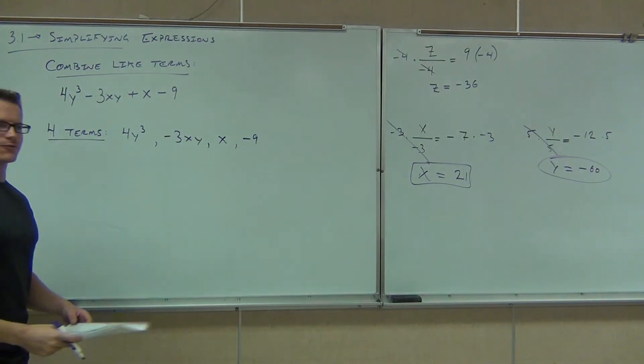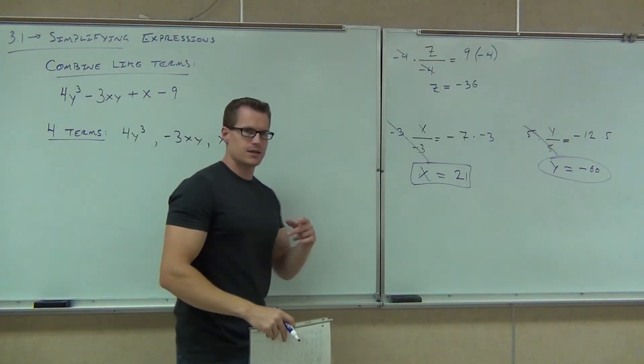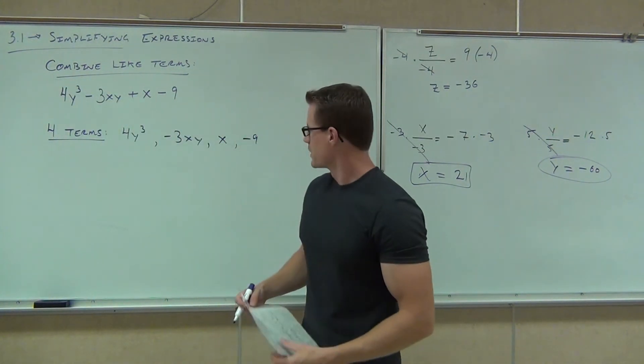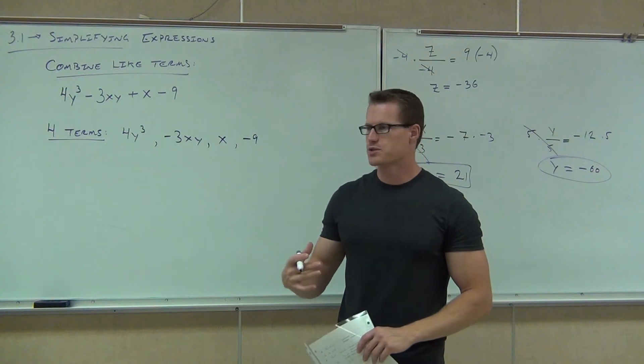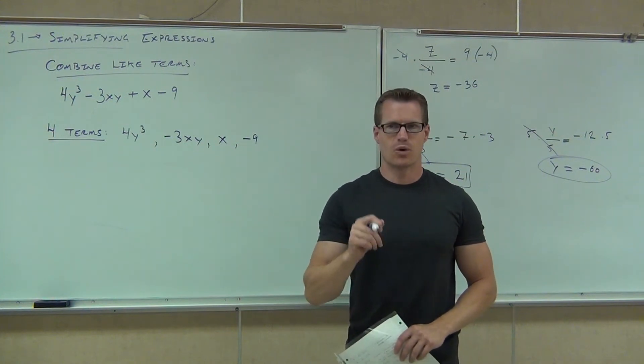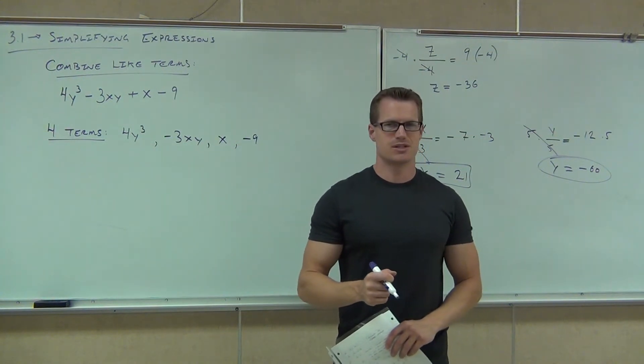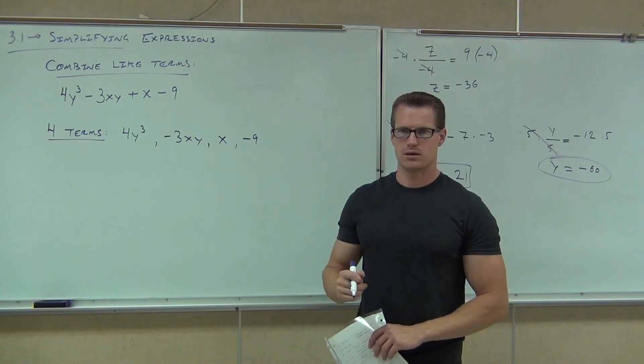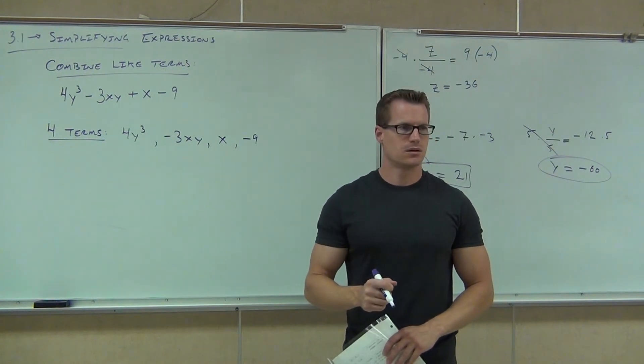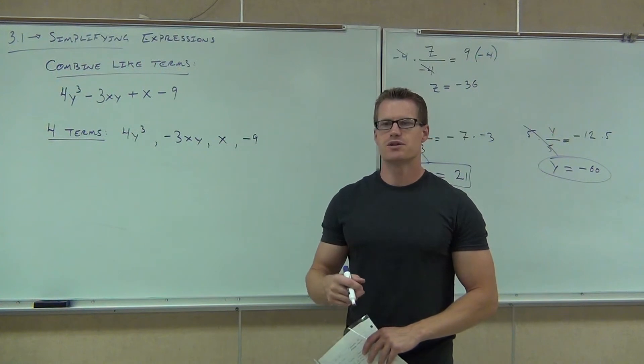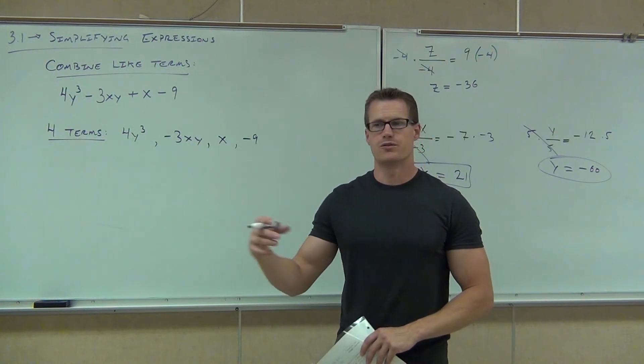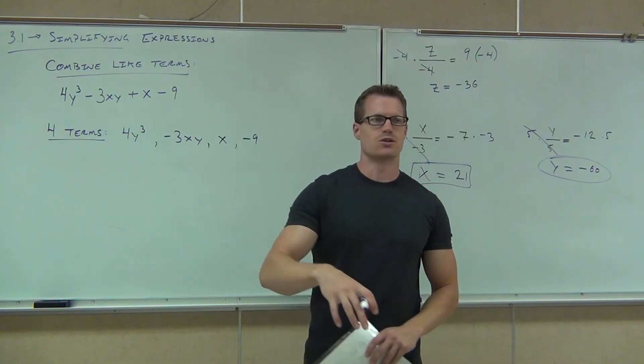Now you're going to notice a difference between these types of these terms up here. We, of course, have four terms, but three of them are the same and one of them is different. Which one is the different one? Negative 9. Why? Because it doesn't have a variable. Right. So we have two different types of terms. We have what are called variable terms and we have constant terms.